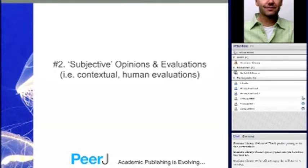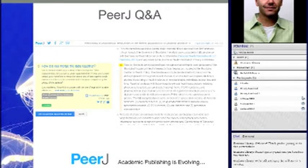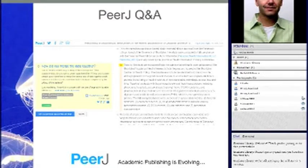Number two is the concept of subjective opinions and evaluations — people leaving comments. You can read an article and form an opinion that wouldn't get tweeted or Facebook-posted. Usually you'd go and discuss it with somebody around the water cooler or over lunch. That insight about whether an article is good or bad gets lost because it's informal. But now with internet technology, you can leave comments on the article.